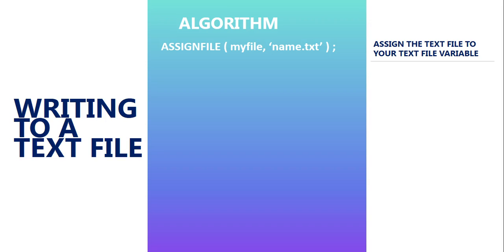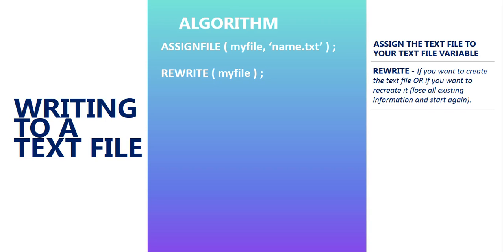If you just use the name of the text file, like 'name.txt', that text file must be in the same folder as your Delphi files. So make sure that you've got your text file there. Well, next we want to Rewrite myFile. What does this procedure do? This procedure creates that text file. So if you associated 'data.txt', Rewrite would create a text file in the same folder as your Delphi files and call it 'data.txt'. If there is already a file called 'data.txt' in the folder, Rewrite will just remove whatever's in it and start again.